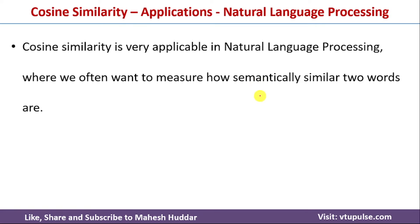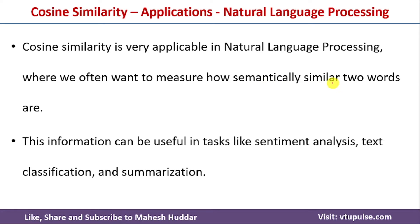Similarly, in natural language processing, when we want to find the similarity between two words, we can find the cosine similarity between those words. Based on the cosine similarity value, we can understand how semantically similar those two words are. We can also use cosine similarity in sentiment analysis, text classification, as well as text summarization.